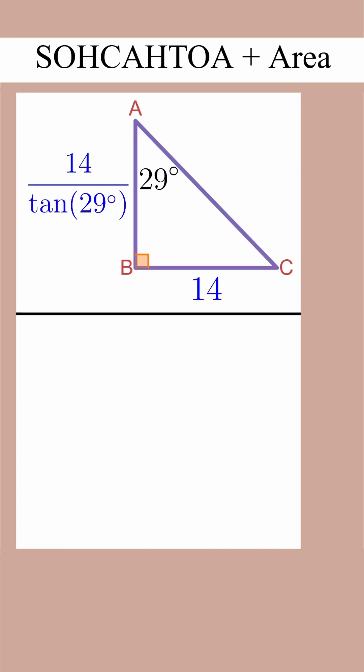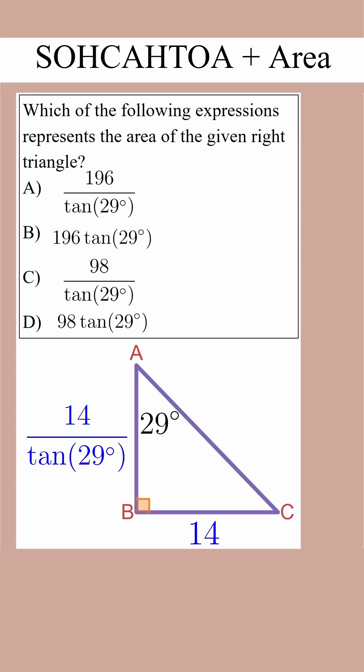We can now add that to our picture and use area equals one-half base times height once again, and we find that the area equals 98 over tan of 29 degrees. We see that resembles choice C, so we can confidently lock in choice C as our answer.